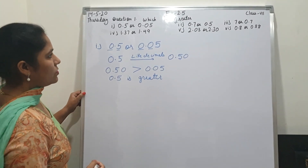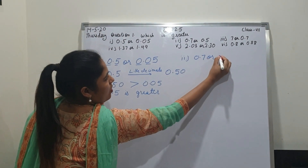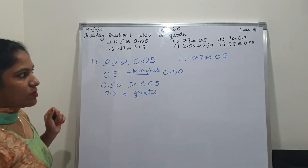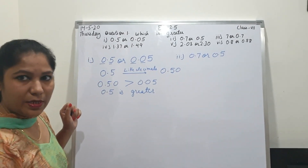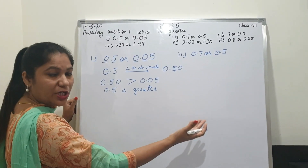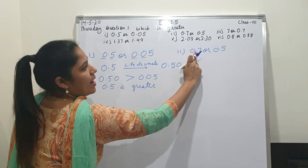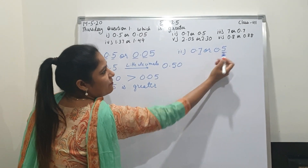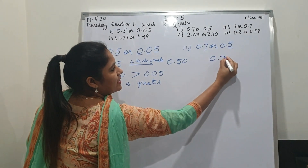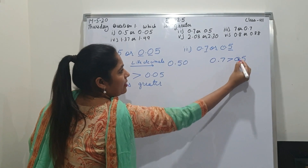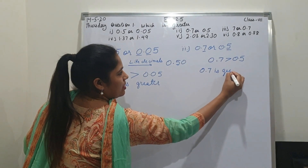Now second part, students. See the second part: 0.7 or 0.5. After the point, one decimal place; after the point, one decimal place. So it means it is a like decimal, so no need to change. Now from left hand side: 0, 0 — both are same. After point: seven and five. Which is greater? Seven is greater than five. So we will write 0.7 is greater than 0.5.